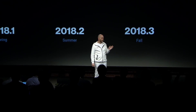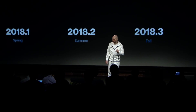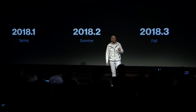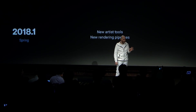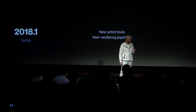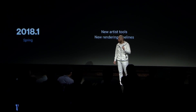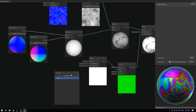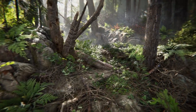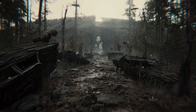Next up, we got a quick overview of the release schedule for 2018. Unity is planning three major releases, which you can see here. 2018.1 is mostly focused on artists and rendering capability, as we've already seen with the announcement of Shader Graph and SRP. According to Unity, they want to keep working on these two themes for the remaining year.